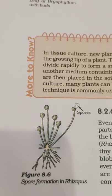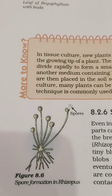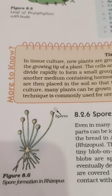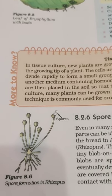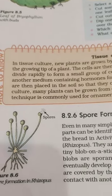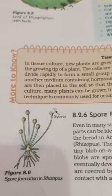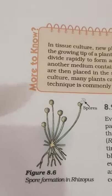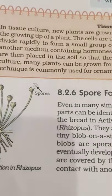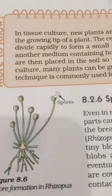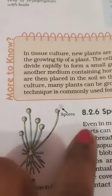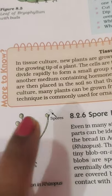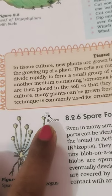These bread mold plants first look like a white cottony mass covering the bread slice, which later turns black. When we observe the blackened bread slice under a magnifying glass, we can see a plant-like structure growing. The common bread mold plant consists of fine thread-like projections called hyphae.